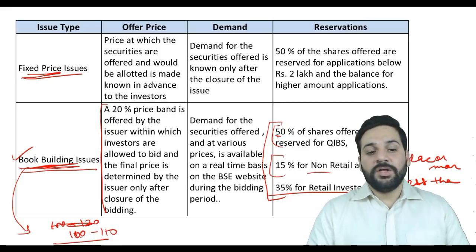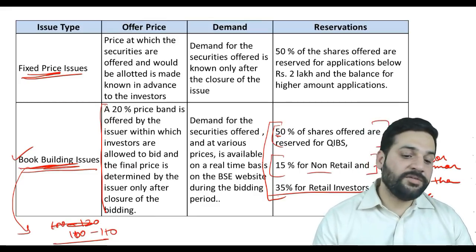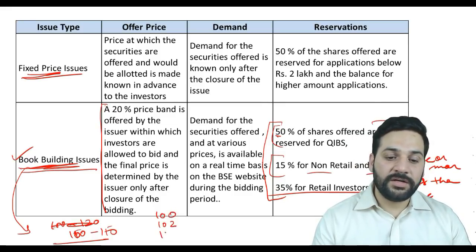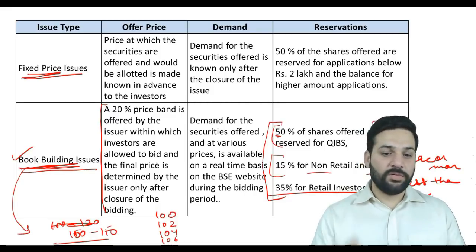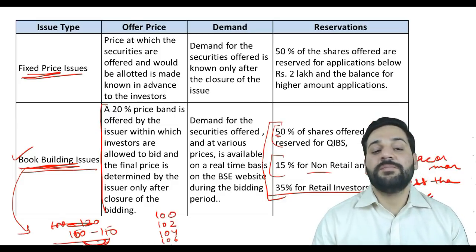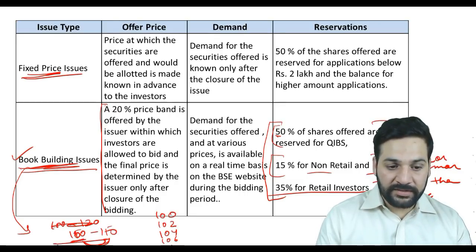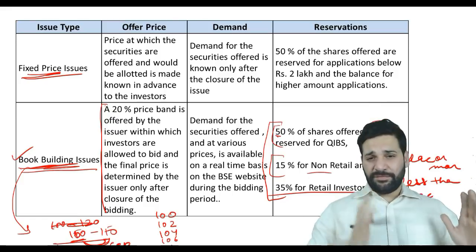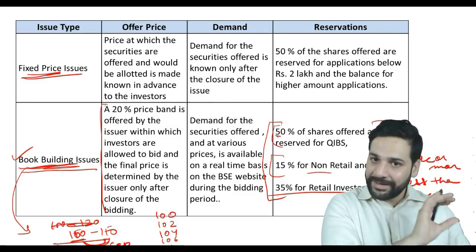If the price band is 100 to 110, it will be mentioned that you can make a bid of 100, 102, 104, 108, 110 — whatever increments are specified — but you cannot bid at 101. The lower price, say 100 rupees, is called the floor price, and 110 is the cap. There can be a maximum gap of 20% between the floor price and cap.